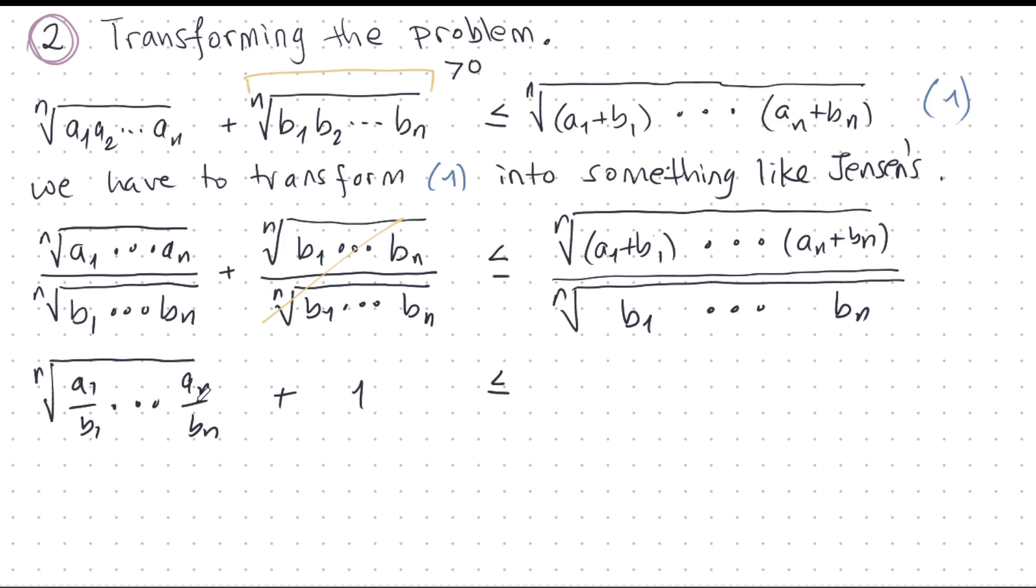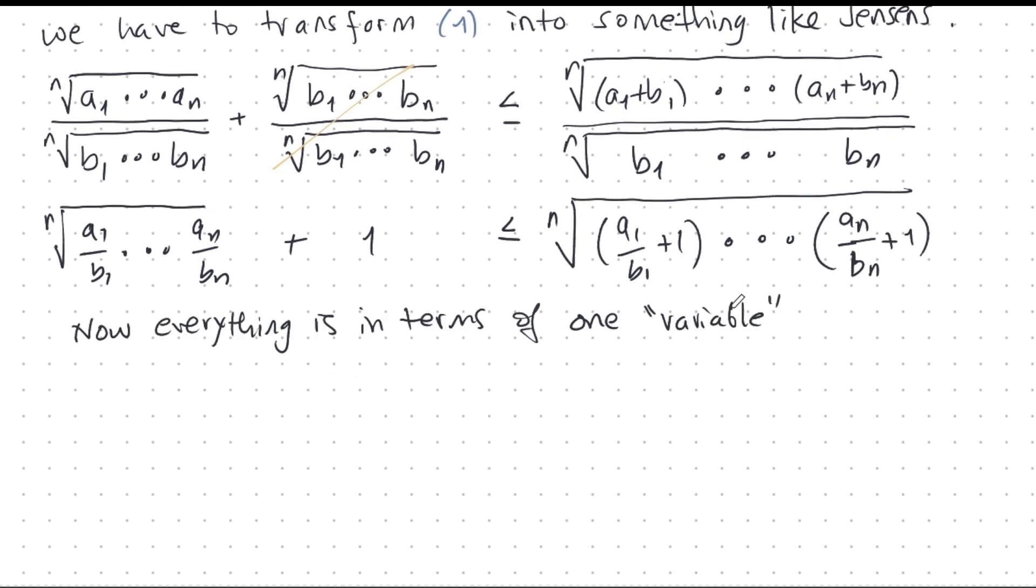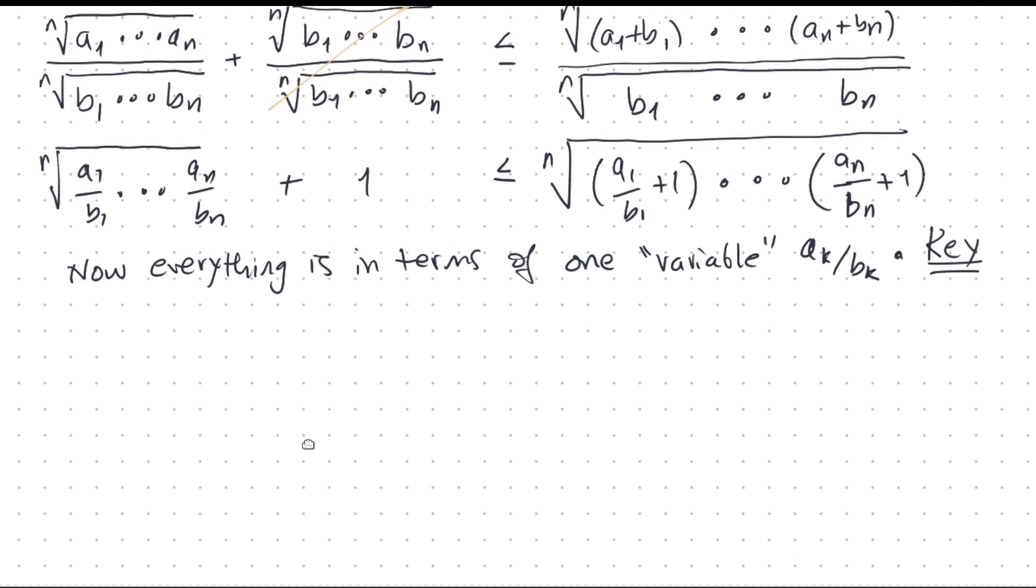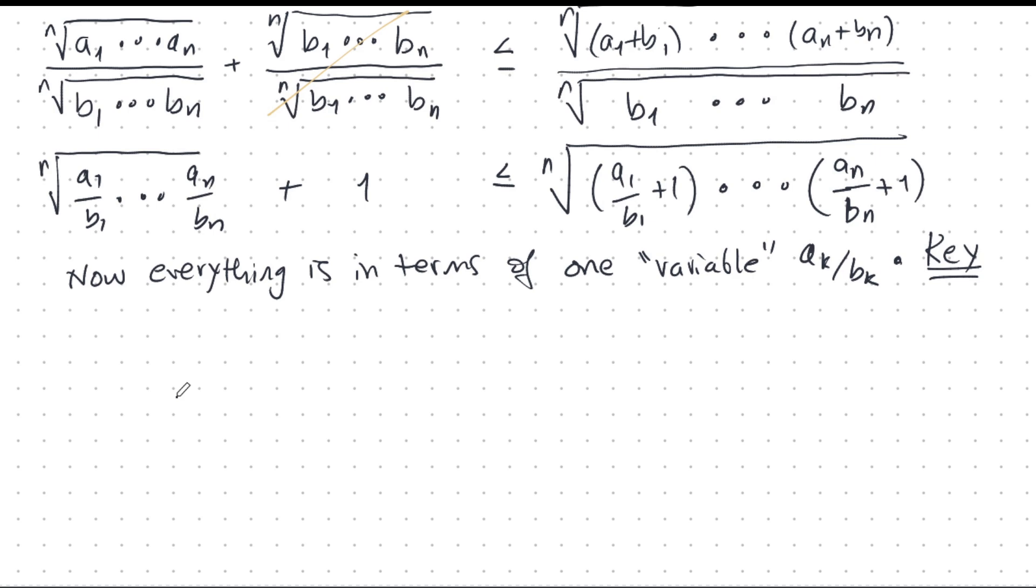So, I end up with this on the left. And this, I can divide each one of these by the corresponding b here. And I get this. And this is pretty good because now everything is in terms of one variable, aₖ/bₖ. This is, you can consider to be like one quantity, one collection of quantities, not two separate ones. So, I think that this is one of the key observations. There's another key one coming up later, but this is a key observation. And with this idea, things start to fall into place.